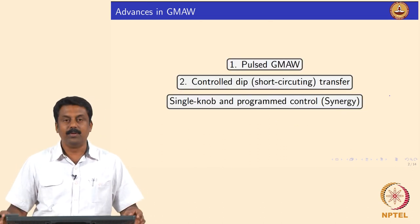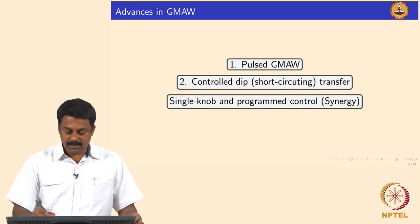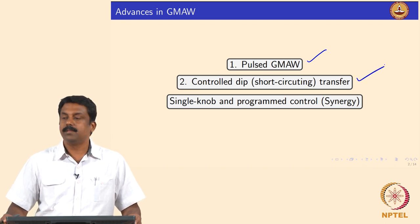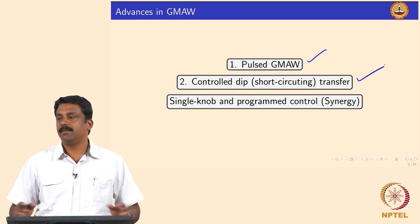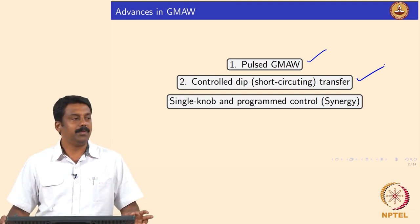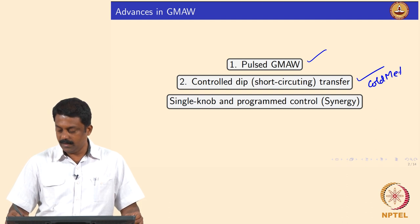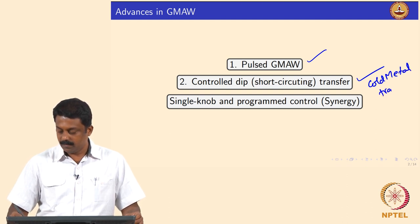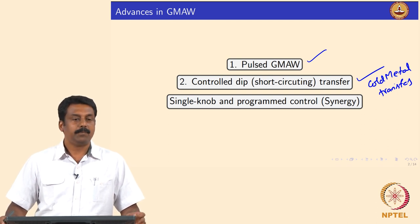There are two advancements I want to cover that are widely used in industries. The first is pulse GMAW, and the second is controlled dip transfer. The most commonly used variant of controlled dip transfer is cold metal transfer (CMT), which is another variant of the controlled short-circuiting transfer where we manipulate the waveforms.